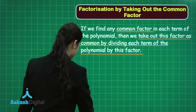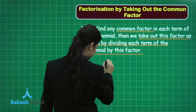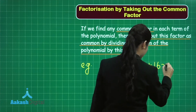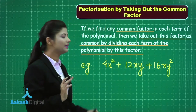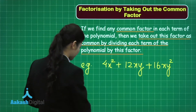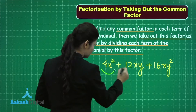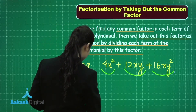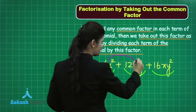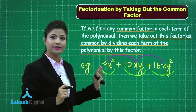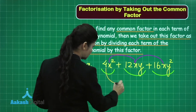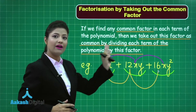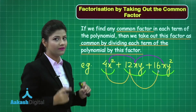For example, consider the polynomial 4x² + 12xy + 16xy². Observing each term, we look for a common factor. We find x is present in all three terms. Also, 4 divides all coefficients: 4, 12, and 16. So each term can be divided by 4x, making 4x the common factor.